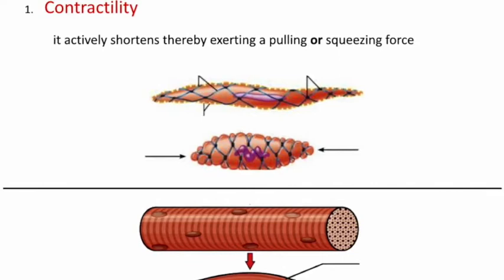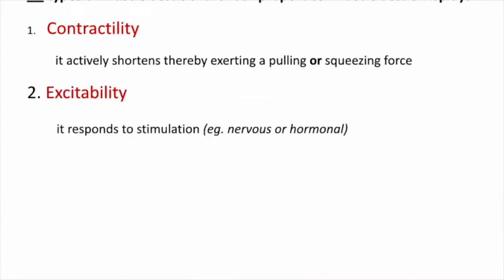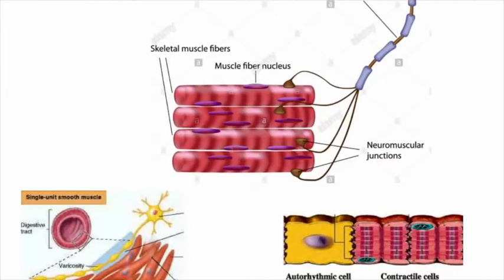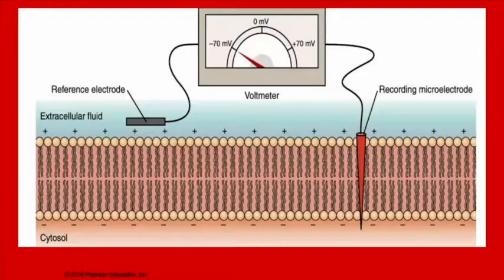All the other properties we'll look at are related to contractility, which is unique to muscle. The second property, not unique to muscle but central to its function, is excitability — that it responds to stimulation, for example from the nervous system or hormonal signals. Nervous tissue is also excitable, so this is not unique to muscle, but it is a property of the specialized membrane we'll see in nerve and muscle cells.